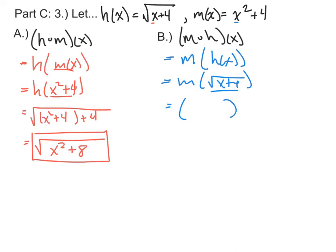So with m, it's x squared plus 4. And instead of x, I'm going to use the square root of x plus 4. Now, since we're squaring a square root, those two will cancel, leaving me with x plus 4. And I'm still going to add the next 4, so that will simplify to x plus 8.